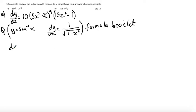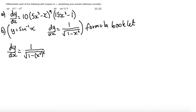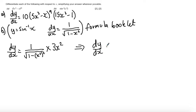So dy by dx — I'm going to differentiate the outside function. Differentiating sine to the minus 1 of x gives 1 over the square root of 1 minus x cubed, replacing x squared with x cubed squared. This is then multiplied by the derivative of the inside function, which is 3x squared.